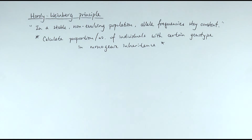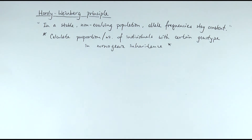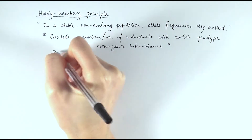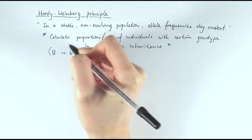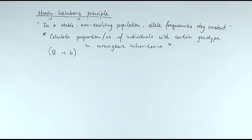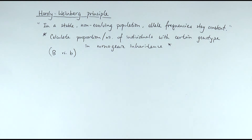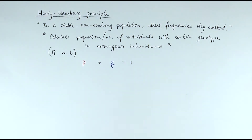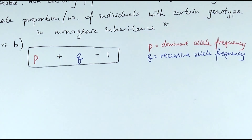Without further ado, let's look at the equations. For monogenic inheritance, we say that each gene has two alleles only — the dominant and the recessive allele. For example, if we're looking at eye colour, we use big letter B for dominant and small letter b for the recessive allele. Both the number of dominant alleles added with the recessive alleles would equal one. Rather than using the letters B, we use the letters P and Q. So the first equation is: P plus Q equals one, which represents 100% of all alleles for that gene.